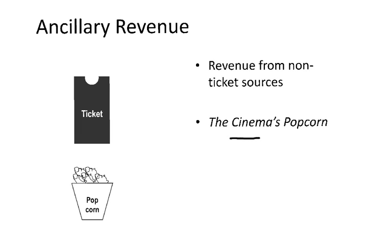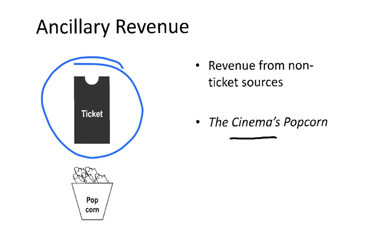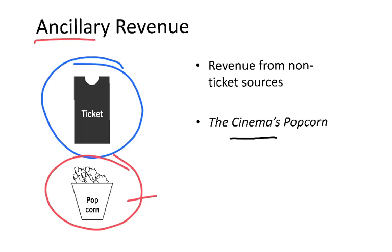To understand this, think of a cinema or movie theater. When you go to a cinema, you normally buy a ticket, and the ticket is the main revenue of a movie theater. But very often, on top of the ticket, we buy something else — a typical example being popcorn. The money that the theater generates by selling popcorn is what is called ancillary revenue.